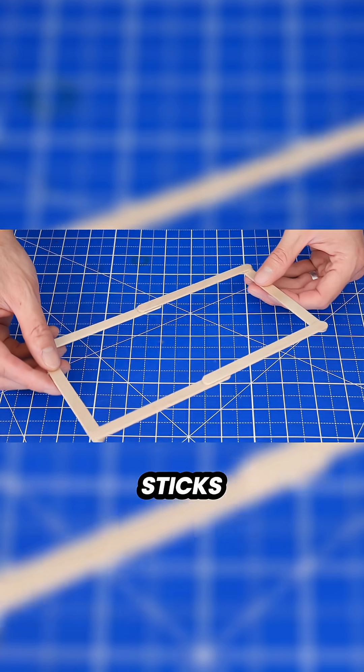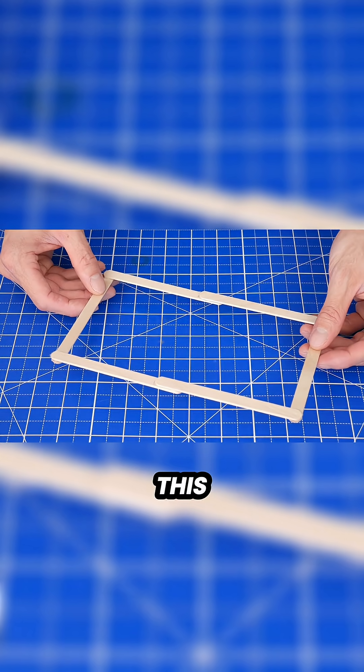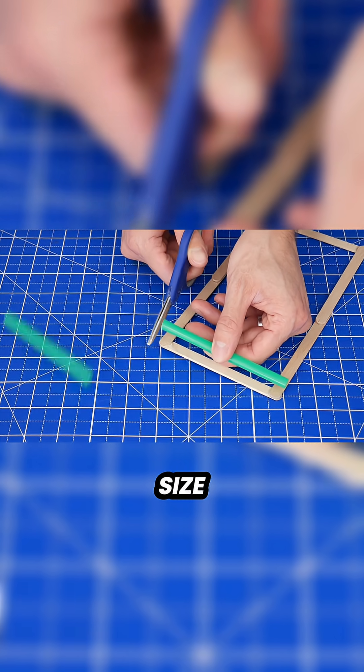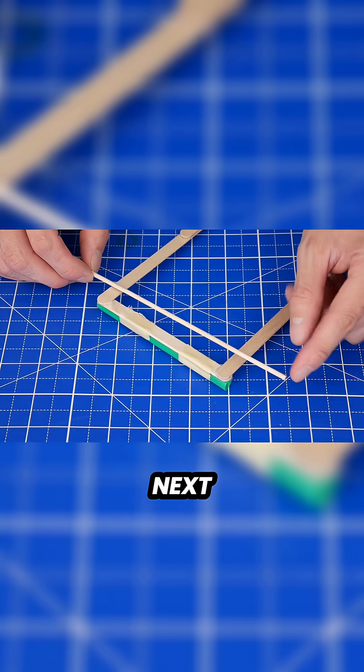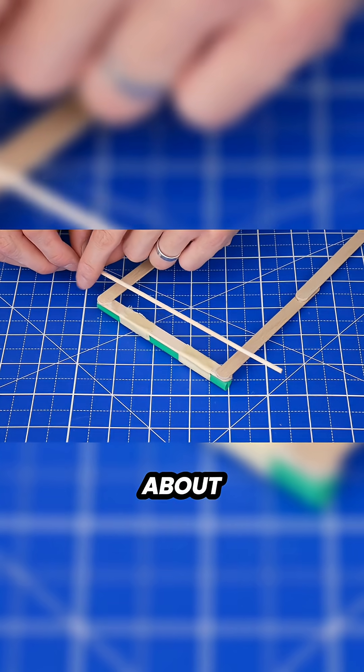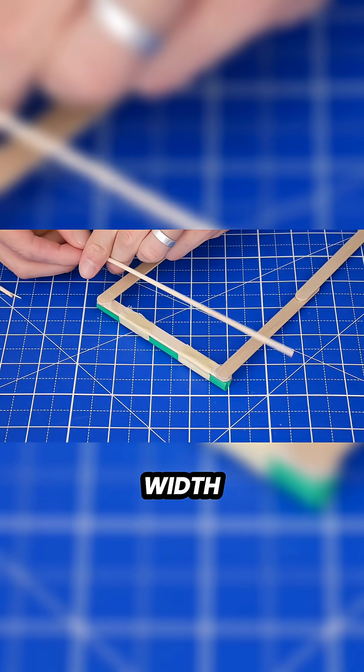First, hot glue six craft sticks into a rectangle like this. Then cut a straw to size and tape it onto the short edge of the frame in two places. Next, cut or break a dowel so that it's about two inches longer than the width of the frame.